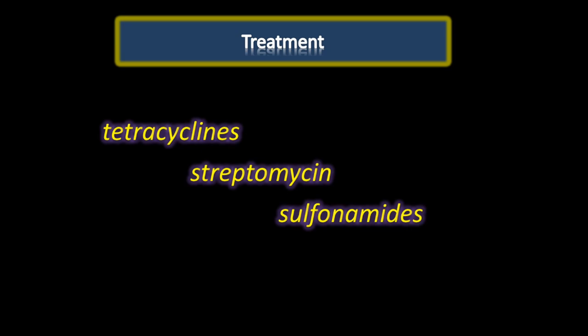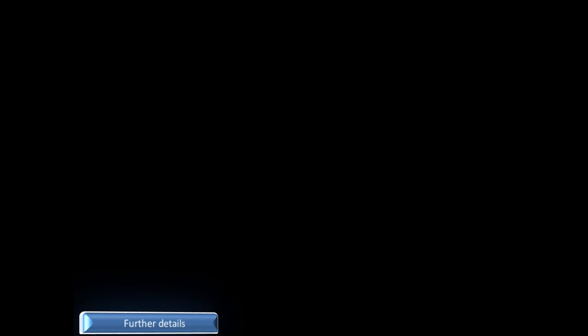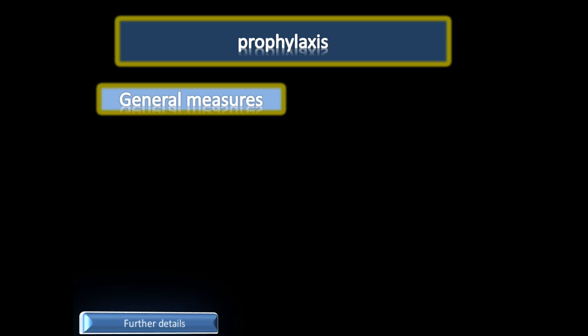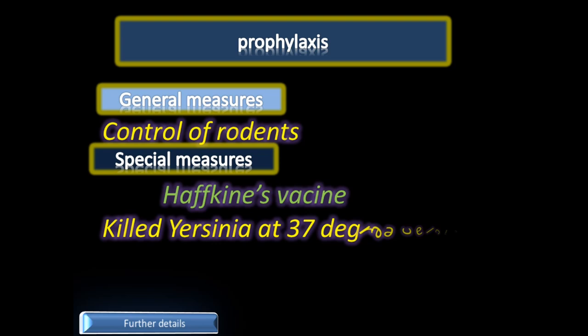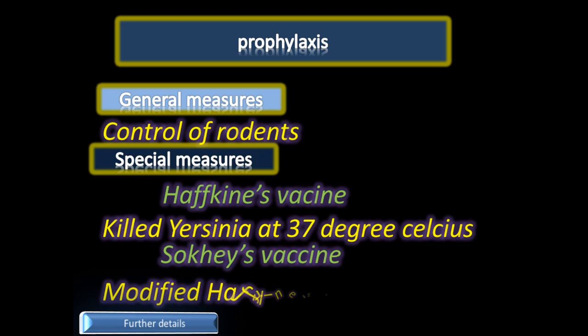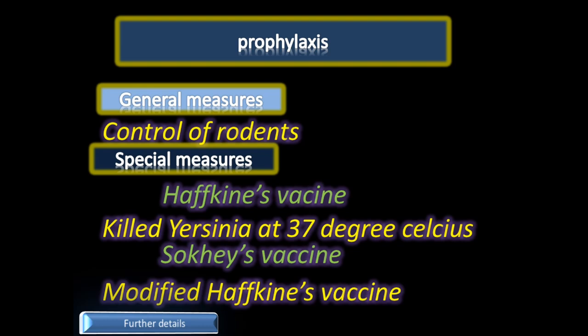Treatment includes tetracyclines, streptomycin, or sulfonamides. Prophylaxis of plague includes general measures such as control of rodents and fleas by informing health authorities of the area. Special measures include vaccines: Haffkine's vaccine, which contains killed Yersinia grown at 37°C, and Sokhey's vaccine, a modified Haffkine's vaccine which is used presently.